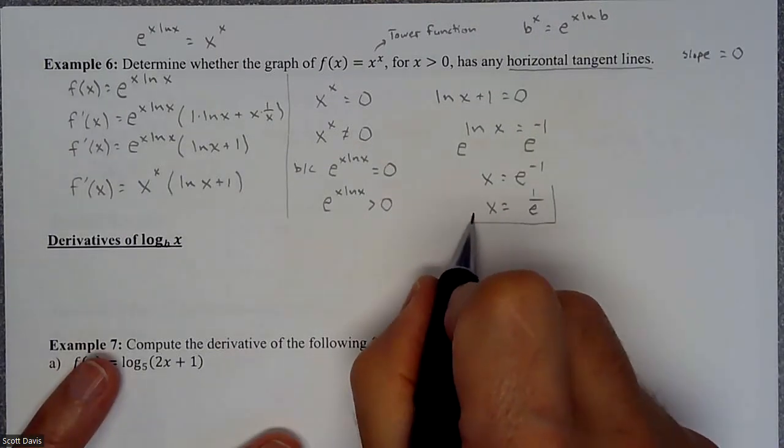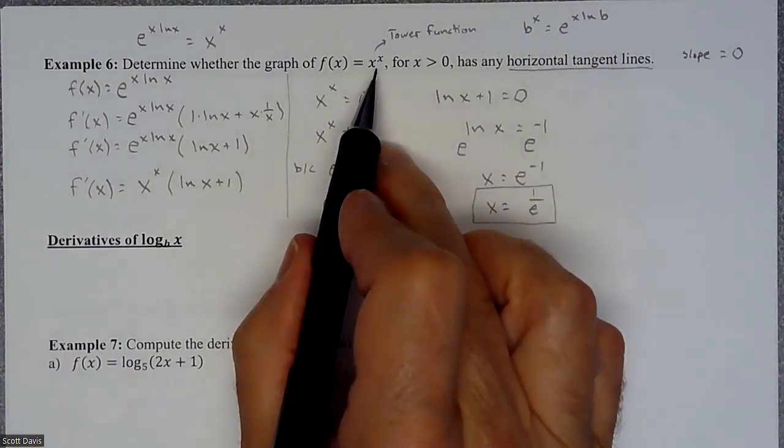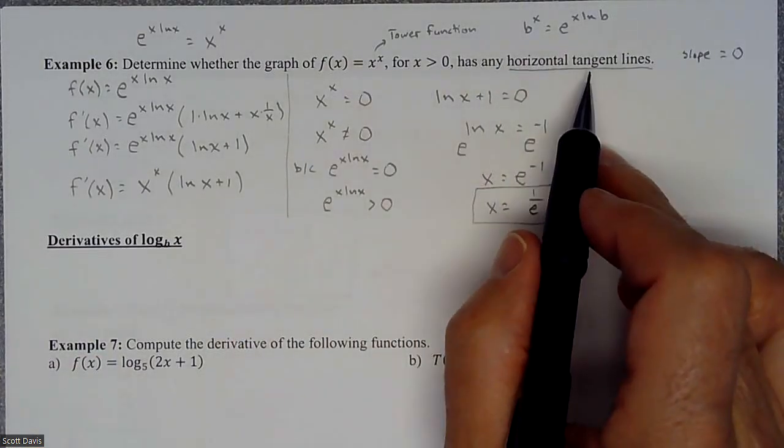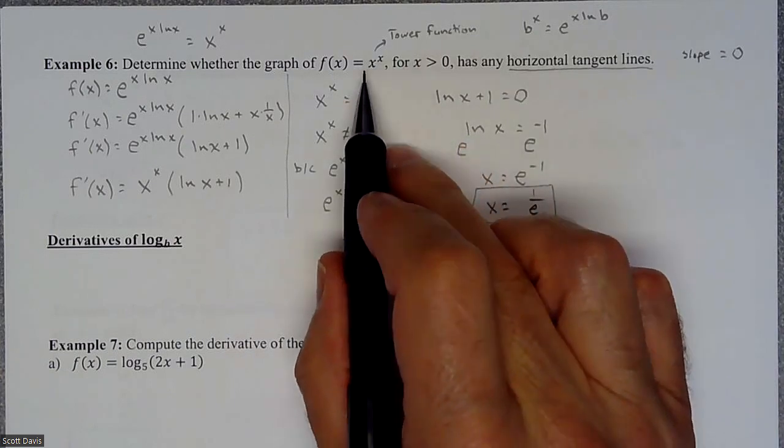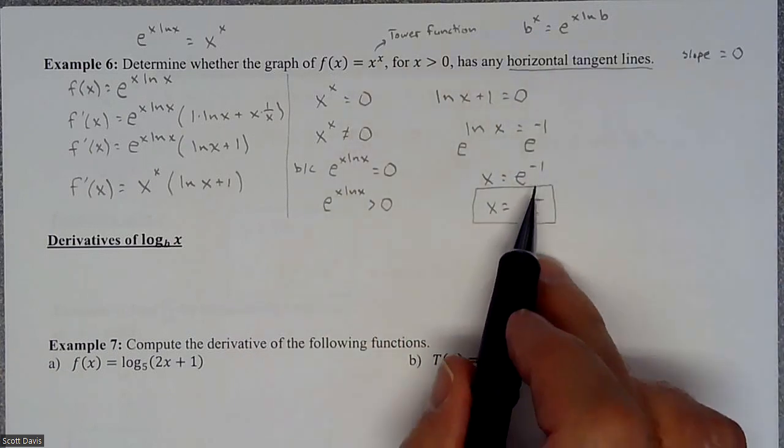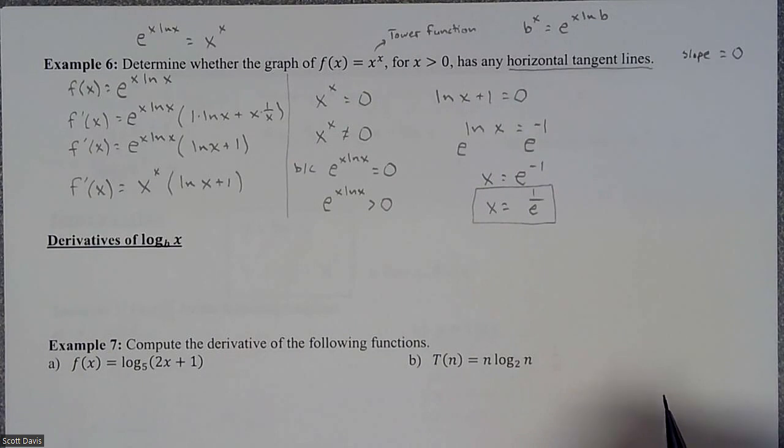So when does this graph have a horizontal tangent line? If you were to graph this, you would have a horizontal tangent line at one over e.